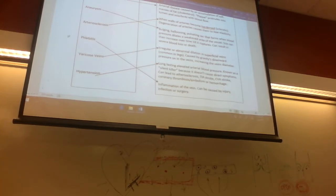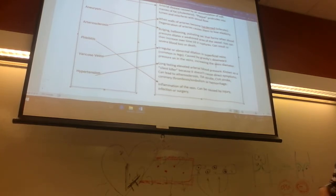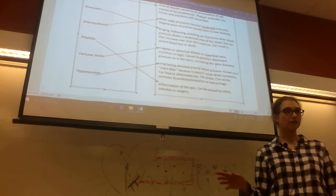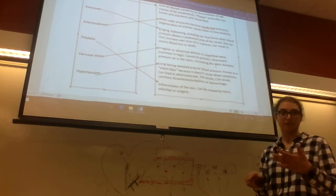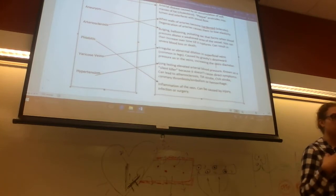Varicose veins are an irregular, abnormal dilation of superficial veins caused by gravity's downward pressure. When you have that downward pressure, your vein valves can be affected and your veins can also stretch out and get bigger. That's why it's helpful — if you work a long shift — to lay with your feet up against the wall for a bit and let that blood drain.